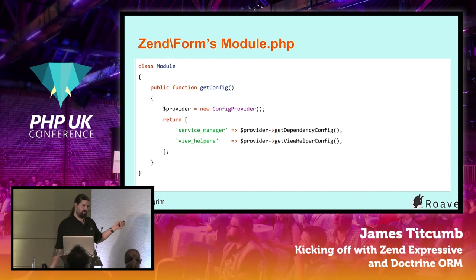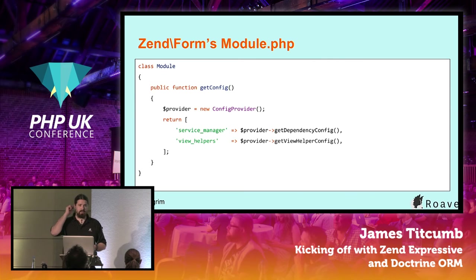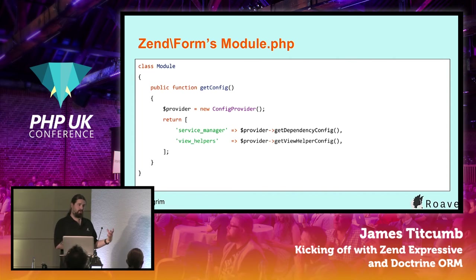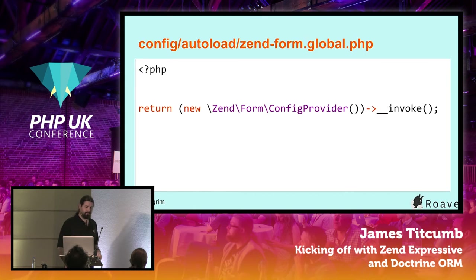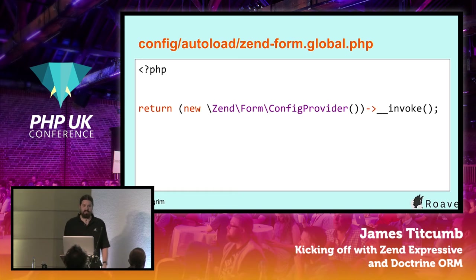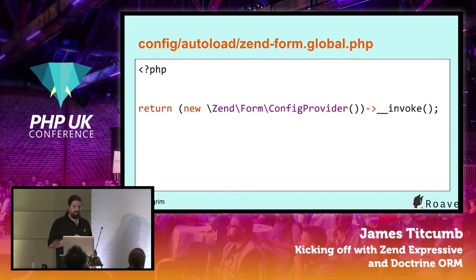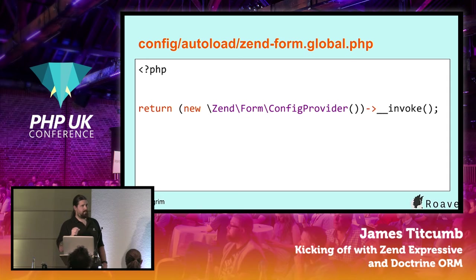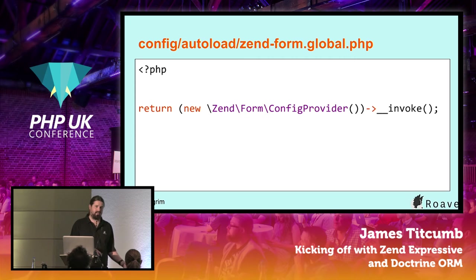Zend Framework has started to adopt config providers for their modules. It's very simple — just some example configuration returned in a function, broken down nicely. It's more portable because we can use the auto-loader to locate this configuration. If the module.php does more than just return config, you might need to add some bootstrap code and duplicate that, which is a bit annoying.